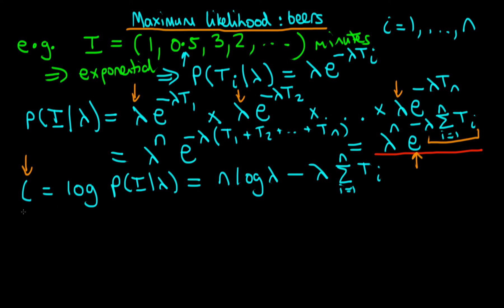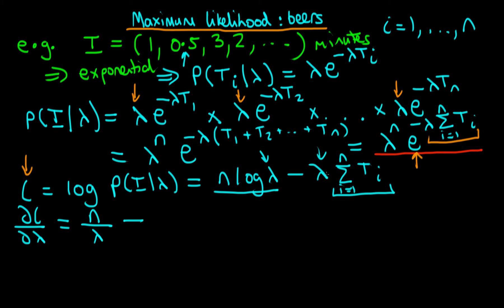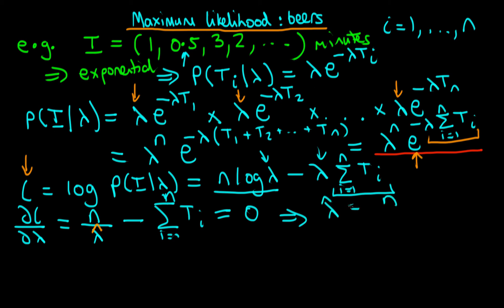Now I differentiate the log-likelihood with respect to lambda. The first term gives n over lambda, since the derivative of the natural log is one over the input. The second term, where lambda appears linearly, disappears leaving minus the sum from i equals 1 to n of ti. Setting this derivative equal to zero defines the maximum likelihood estimator lambda-hat.